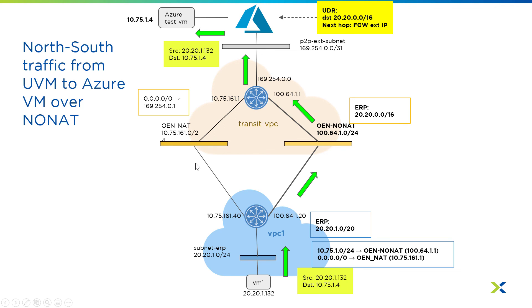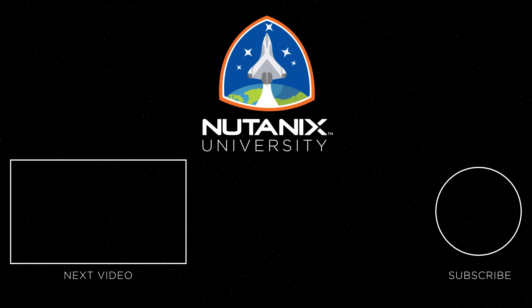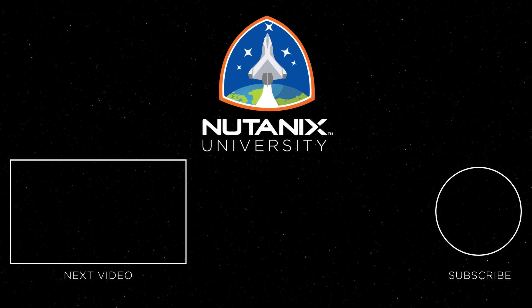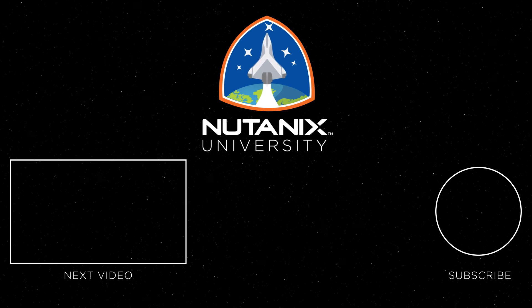That's how we're able to do both NAT and no NAT inside of our Nutanix cluster in Azure. Now that we have a complete picture of traffic flows in Azure with our Nutanix cluster, let's take a look at the virtual flow networking inside of Prism Central in the next video. See you there.